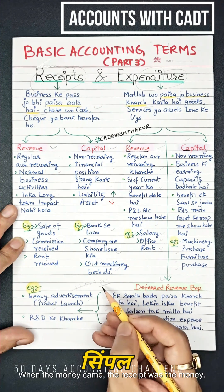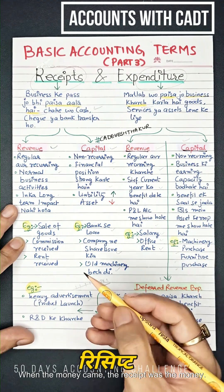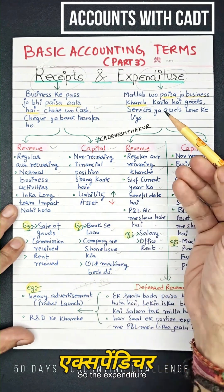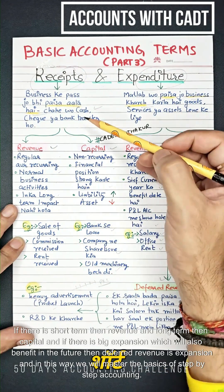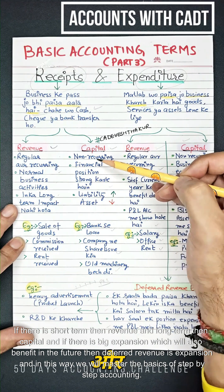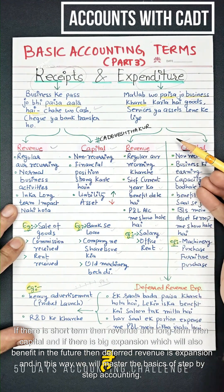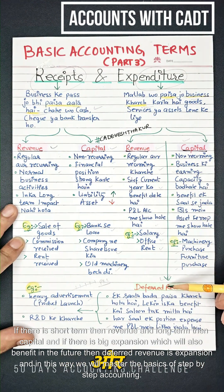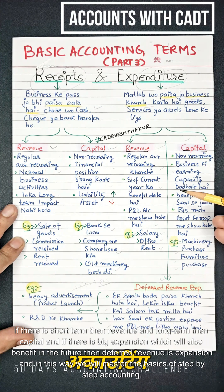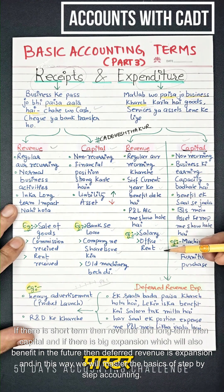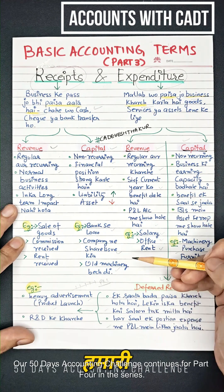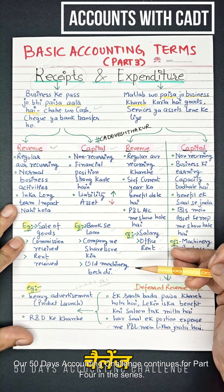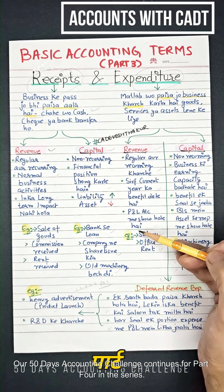To summarize: when money comes in, it's a receipt. When money goes out, it's expenditure. If the benefit is short-term, it's revenue; if long-term, it's capital. And if it's a large expense whose benefit also extends into the future, it's deferred revenue expenditure. This way, we master the basics of accounting step by step. This is part 4 of our 50-day accounting challenge.